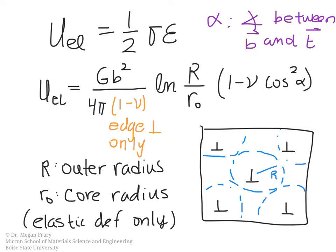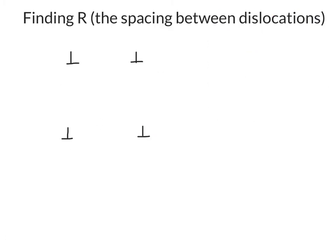r0 is something that we normally assume as a constant. And so really, if we want to find the elastic energy associated with a dislocation, what we need to do is find a value for big R, the spacing between dislocations. So let's look at how we would do that. Let's start by doing this in two dimensions because that's a little bit easier. Let's assume that we have this square array of dislocations, and these dislocations have a spacing L between them in this direction and also L between them in this direction. So in 2D then, our area is simply L squared.